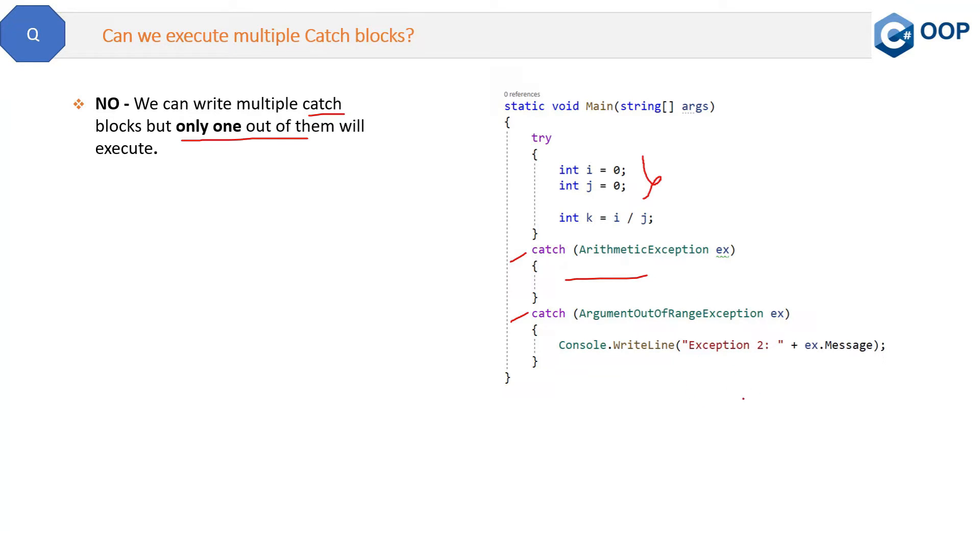For example, suppose you don't want to show or log any error if any arithmetic exception will occur. Then you can just keep this catch block as blank and it will do nothing and will just continue the program. So that is the purpose of the multiple catch blocks.